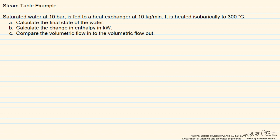In this screencast we are going to use the properties of a steam table to solve an example problem. We have 10 kilograms per minute of saturated water at 10 bar, fed to a heat exchanger where it's heated isobarically — in other words at the same pressure — to 300 degrees C.